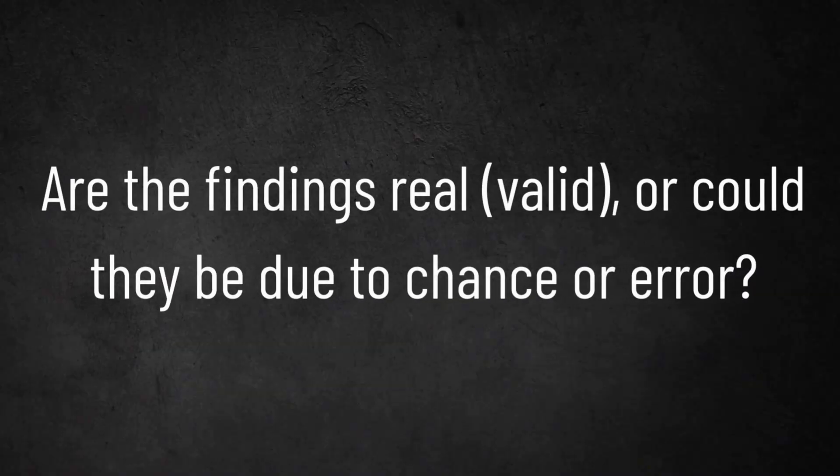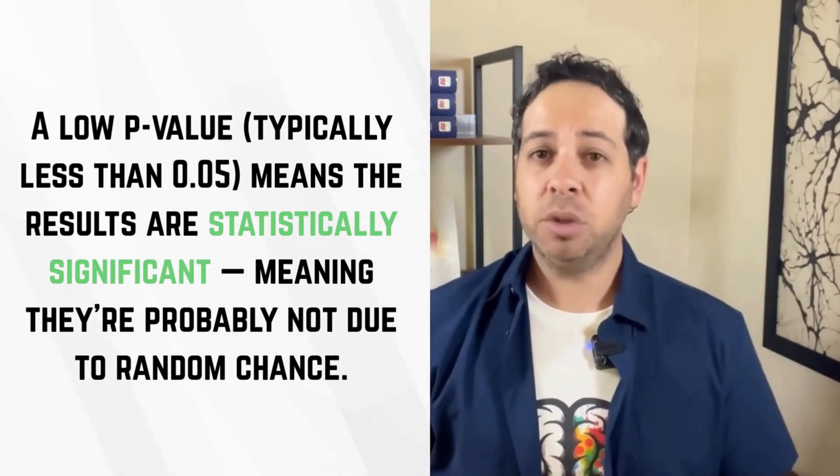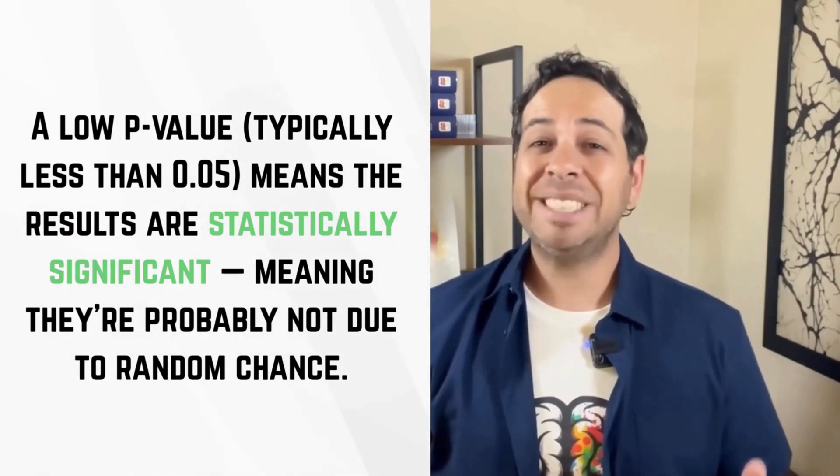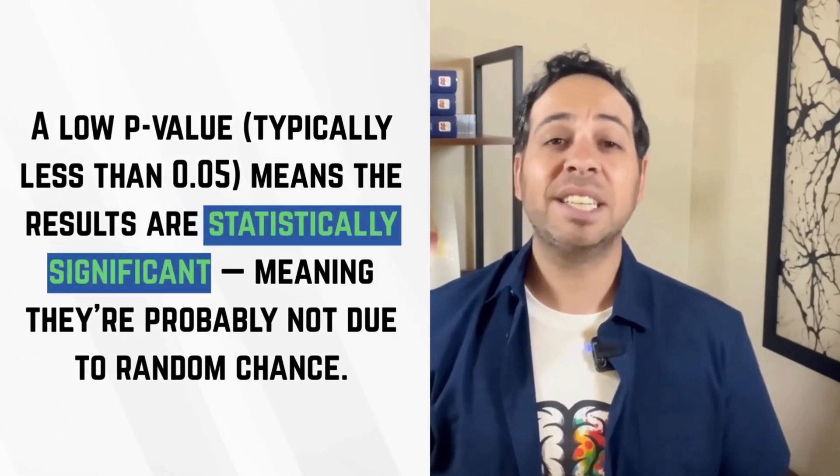If a researcher is curious about whether the findings are real or just random, that's where the p-value comes in. P stands for probability. The p-value helps answer the question, how likely is it that these results happen by chance? A small p-value, usually less than .05, means it's unlikely the results happen by chance. So we consider them statistically significant.